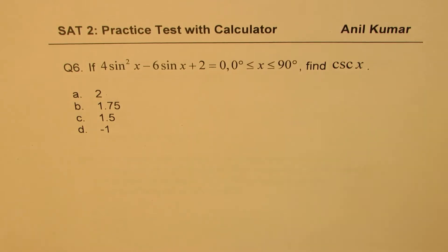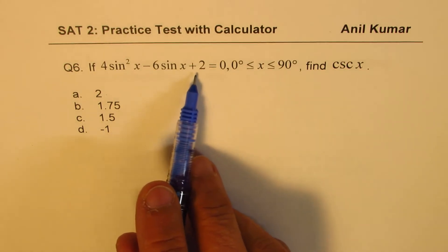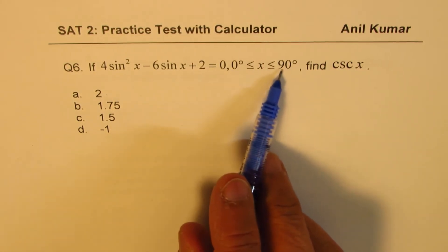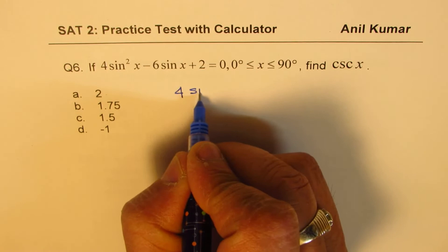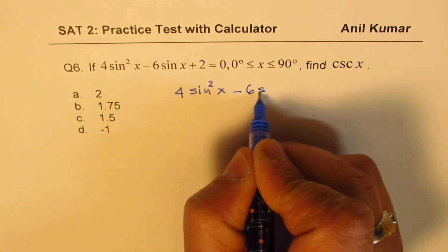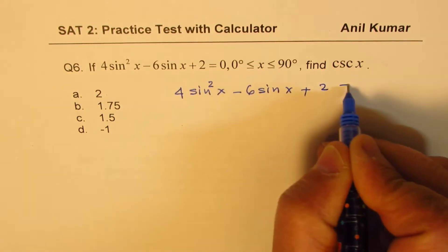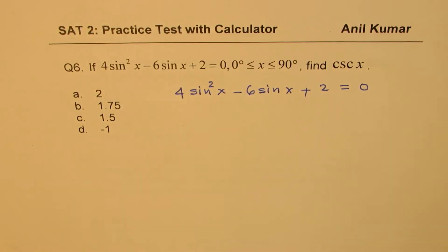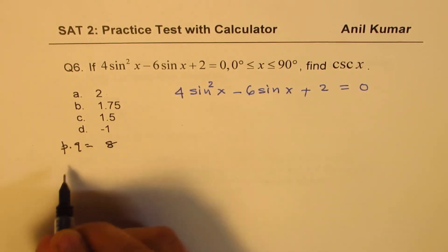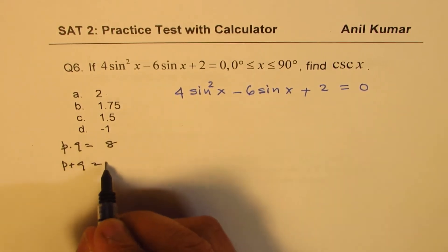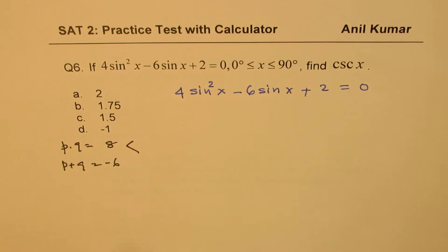Question 6 — trigonometry is a huge component of the new SAT, so you need to practice it. The question is: if 4 sine squared x minus 6 sine x plus 2 equals 0, and x is between 0 and 90 degrees, find cosecant x. This is like a quadratic equation. The product of two numbers needs to be 4 times 2 equals 8, and their sum must be negative 6.